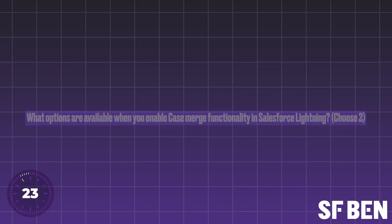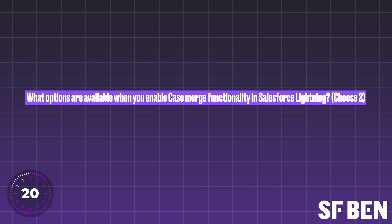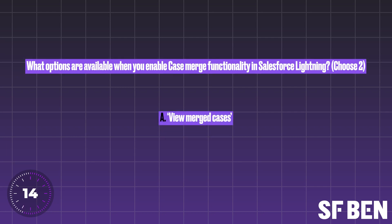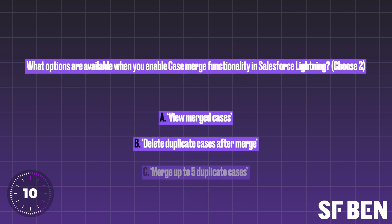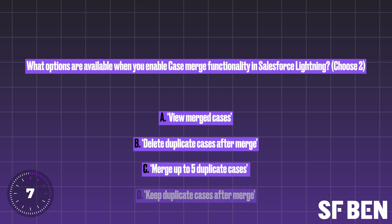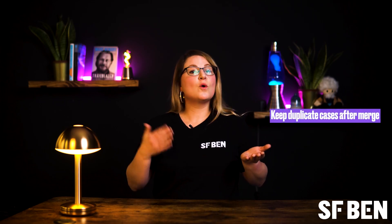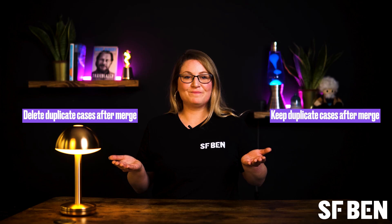Question three. What options are available when you enable case merge functionality in Salesforce Lightning? Choose two answers. A: View merged cases. B: Delete duplicate cases after merge. C: Merge up to five duplicate cases. D: Keep duplicate cases after merge. For this question, B and D are correct. Case merge functionality must be enabled in Salesforce Lightning Experience. In addition to selecting enabled, you can choose to keep duplicate cases after merge or delete duplicate cases after merge. If you select keep duplicate cases after merge, they will be visible in the merged cases related list. Note that only three cases can be merged at one time.